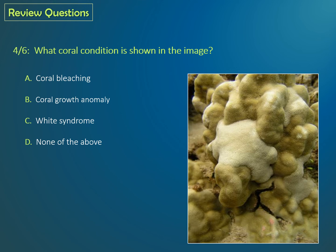Question 4: What coral condition is shown in this image? Is it A, coral bleaching; B, coral growth anomalies; C, white syndrome; or D, none of the above? If you said B, coral growth anomaly, you are correct.